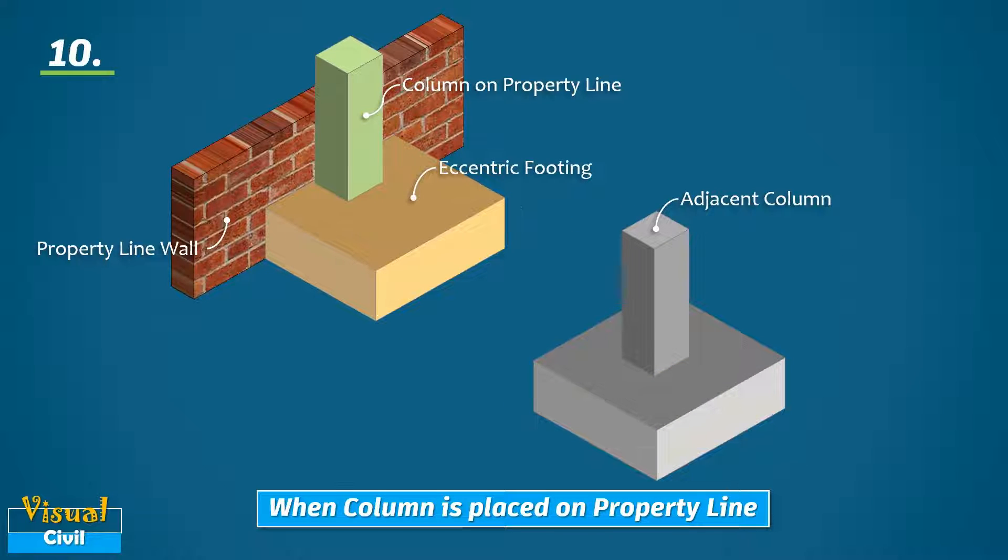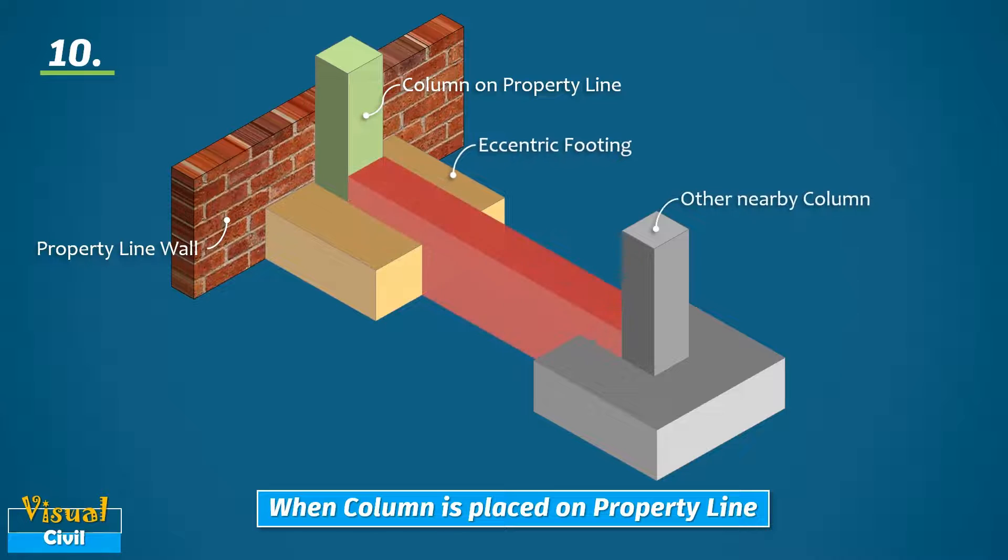Otherwise, we can also connect the eccentric footing with an adjacent column footing by a beam called a strap beam. This arrangement helps in distributing the weight of the eccentrically loaded column footing to the adjacent footing. This type of footing is called a strap footing.